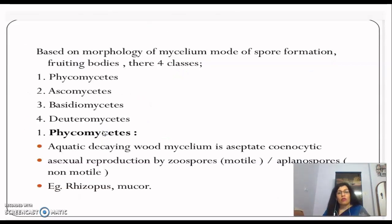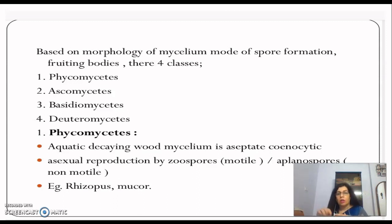Based on the morphology of mycelium, mode of spore formation, and fruiting bodies, Kingdom Fungi is divided into four classes: Phycomycetes, Ascomycetes, Basidiomycetes, and Deuteromycetes.